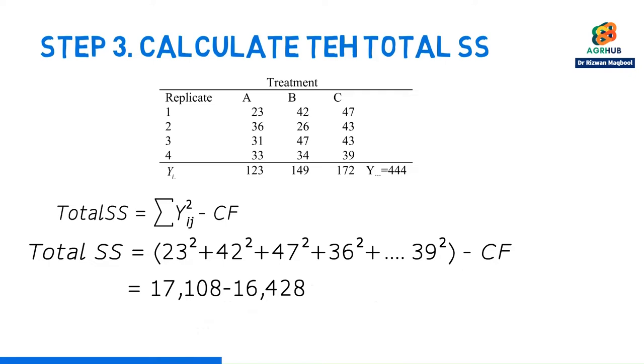Now, if we subtract off the correction factor from above 17108, we get the answer 680. So, there is our sum of squares total.